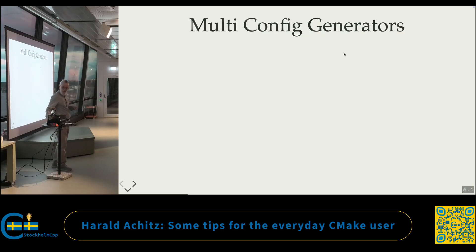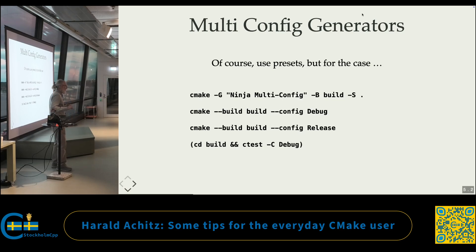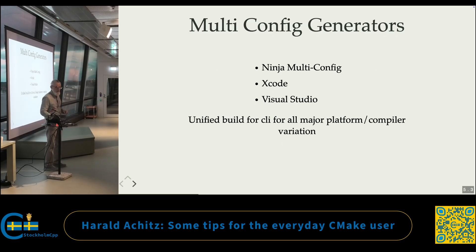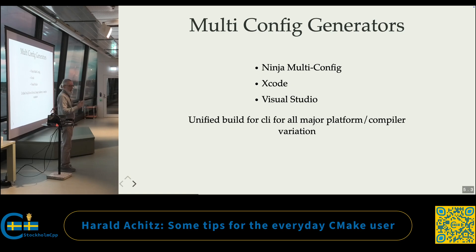Multi-config generators — you've already seen one. So what is a multi-config generator? We have three multi-config generators in the CMake toolbox: Ninja multi-config, Xcode, and Visual Studio. Xcode and Visual Studio are by nature multi-config generators. You should use them as such, because otherwise you create trouble for yourself and that's not worth it. So use multi-config generators.